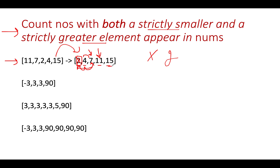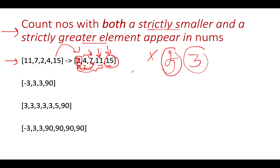For 11, there are three possibilities for strictly smaller elements and one for strictly greater, so the count updates to 3. For 15, there are four possibilities for smaller elements but no greater element, so it doesn't contribute. The key insight: the minimum element and the maximum element will never contribute to the answer, because for the minimum there is no smaller element, and for the maximum there is no greater element.